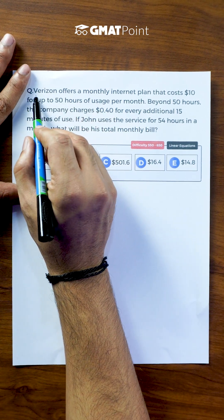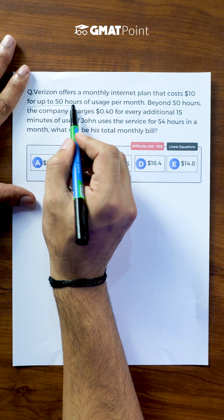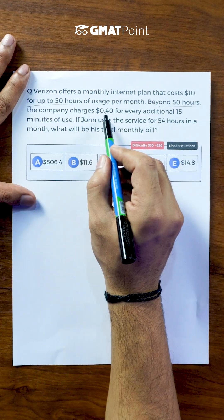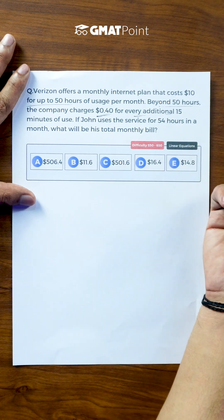Let us see how to solve this question. Verizon offers a monthly internet plan that costs $10 for up to 50 hours of usage per month. Beyond 50 hours, the company charges $0.40 for every additional 15 minutes of use.